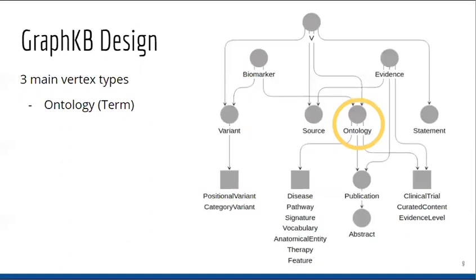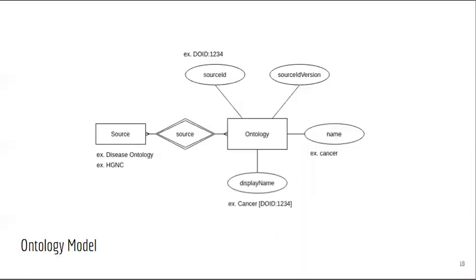There are three main types of tables for vertices in GraphKB. The first is ontology terms. Nearly everything that is not a variant or a statement in GraphKB is represented as an ontology. The ontology model stores both the source of the term as well as its ID, name, and versioning information according to the source ontology. This ensures that it is traceable and also allows us to store multiple ontologies simultaneously.